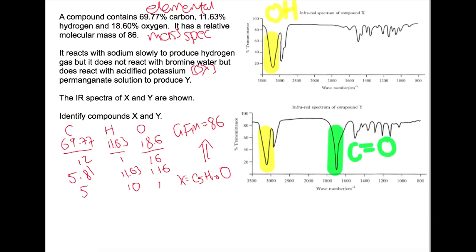If we look at the details that we have about compound X and its reactivity, it says that it reacts with sodium slowly to produce hydrogen gas. Alcohols react with reactive metals to produce alkoxides and hydrogen gas so that would reinforce our knowledge that this is indeed an alcohol. It then reacts with potassium permanganate solution which is an oxidizing agent which would then allow you to produce a carboxylic acid. The final bit of information we have is that it doesn't react with bromine water.